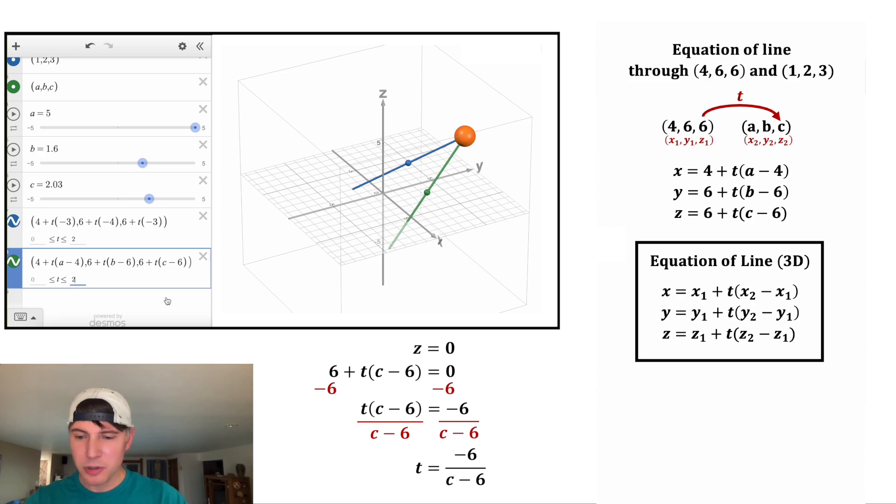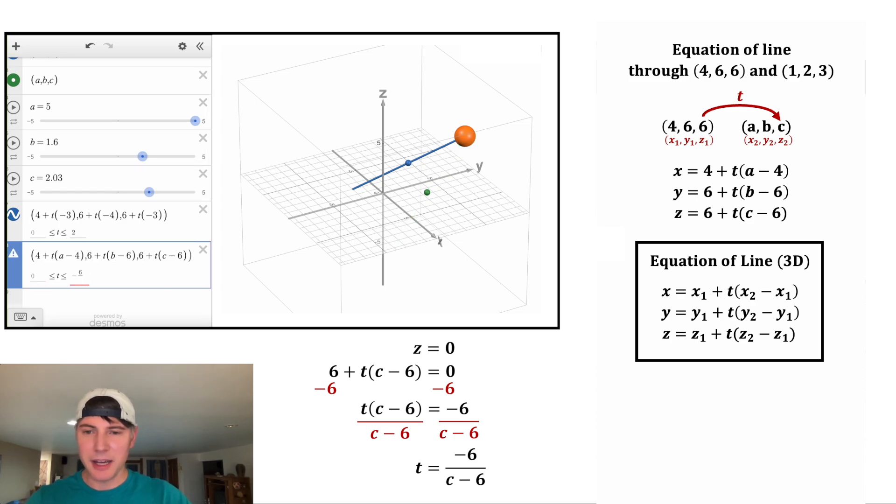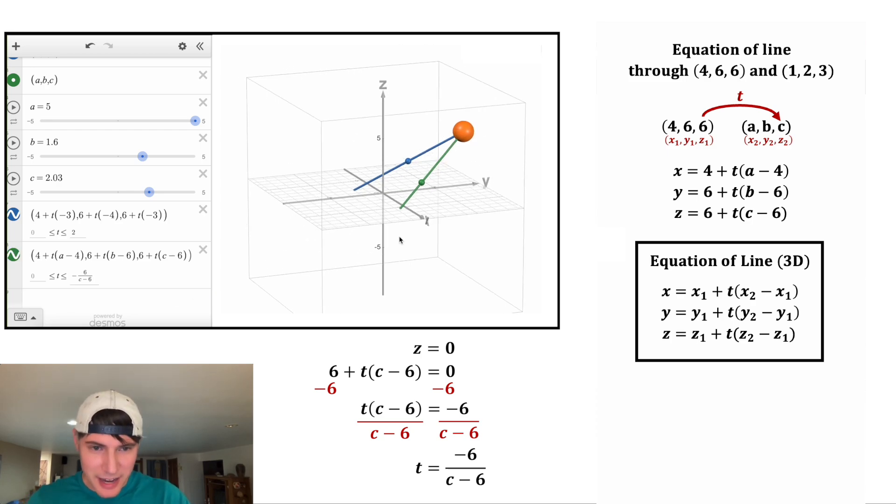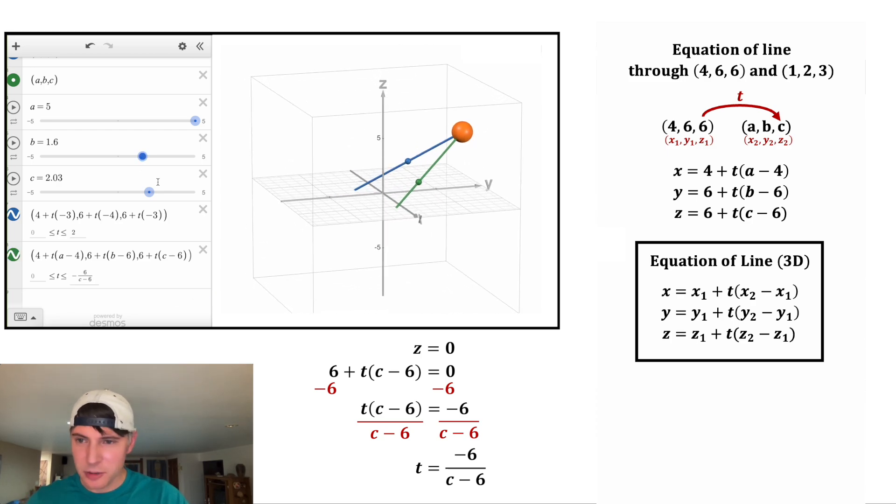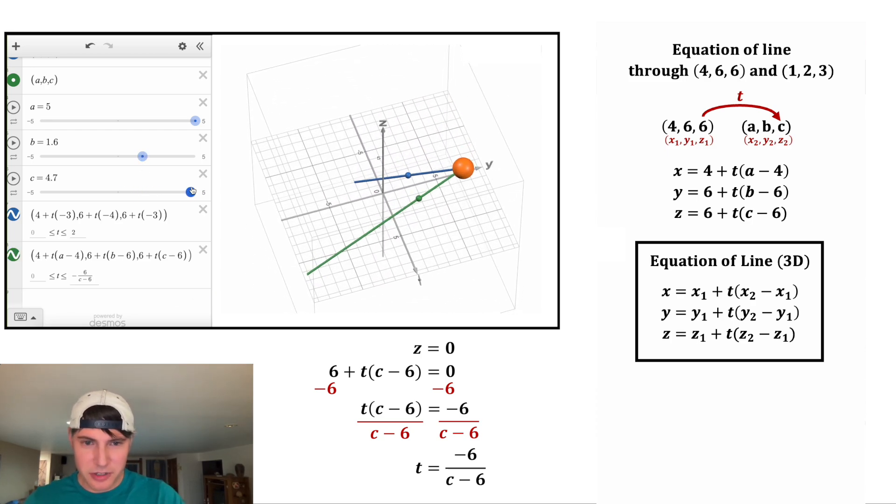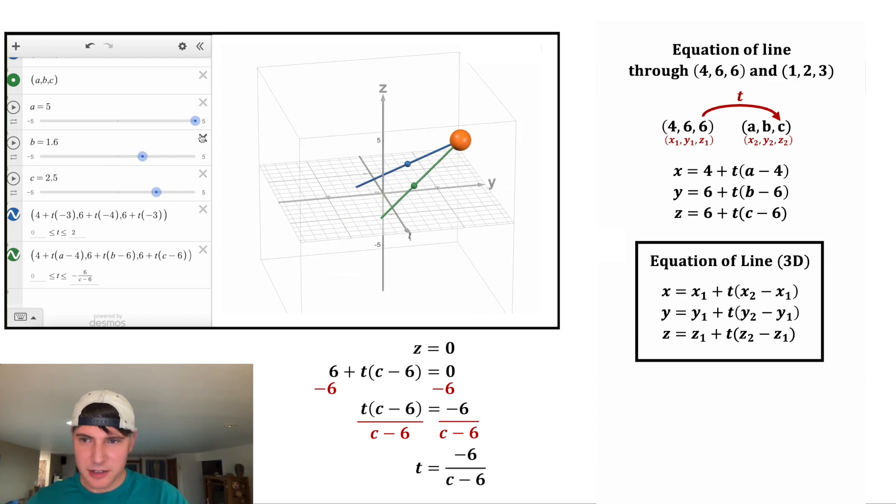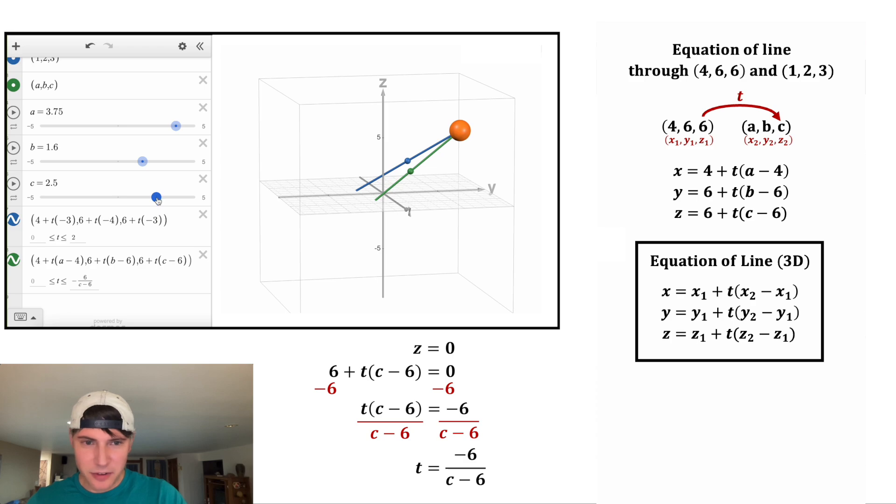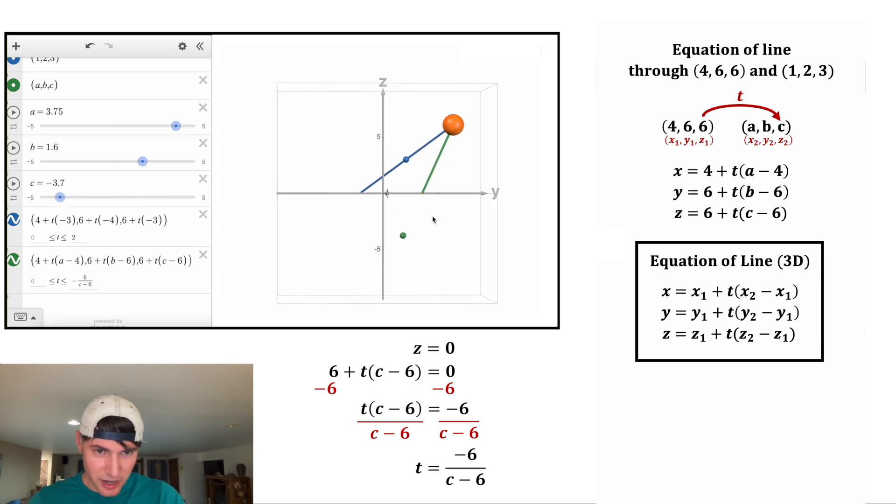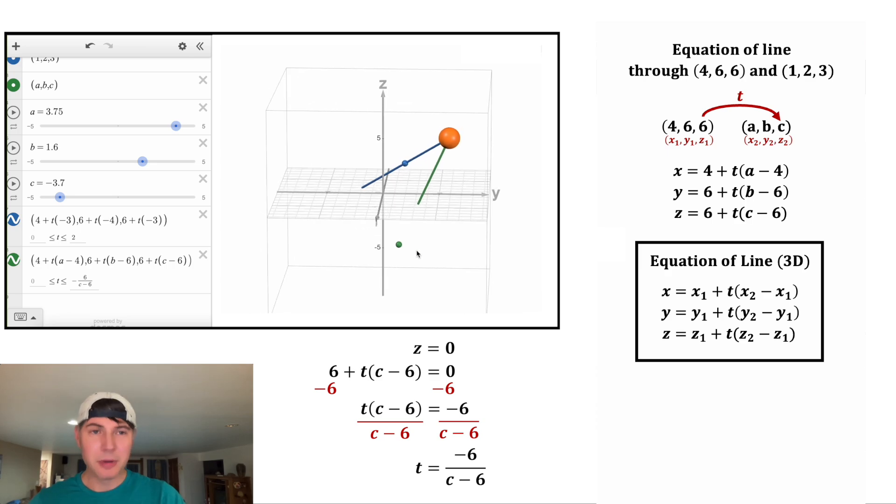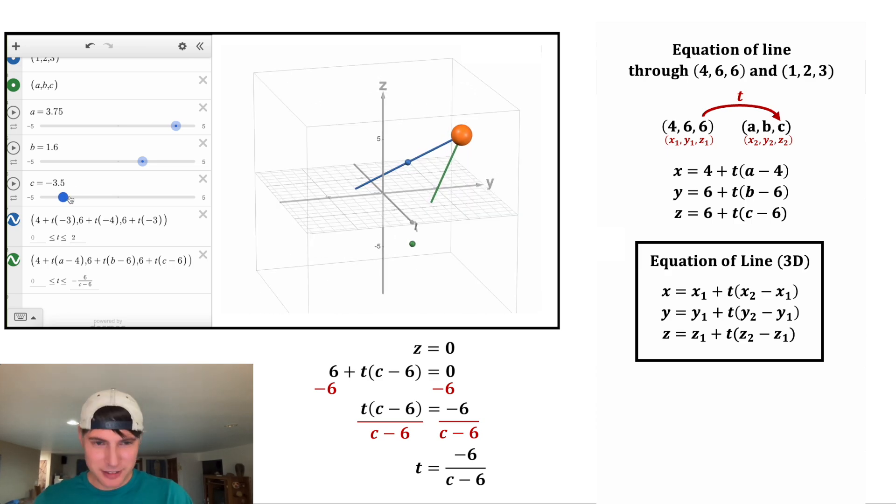So in the place of this 2, I'm gonna put negative 6 divided by (c minus 6). And now it stops on the x, y plane. So no matter where I put this point, it's always gonna stop on the x, y plane. Isn't that cool? So this can move around like this. It can move around this way. And even if I go below, it'll still stop. So it's shooting in the right direction like if we're gonna hit that point, but it's stopping on the x, y plane. So let's bring it back up here. And that's it. That's how it's done.